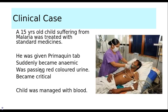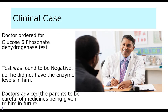I'll give you a classical clinical situation. A 15-year-old boy suffering from malaria was treated with standard medications. He was also given Primaquine as a standard treatment for malaria. He suddenly became anemic, his condition became critical, and he was passing red-colored urine. The child was managed with blood transfusion. The doctor advised the parents to get a Glucose 6 Phosphate Dehydrogenase test done.